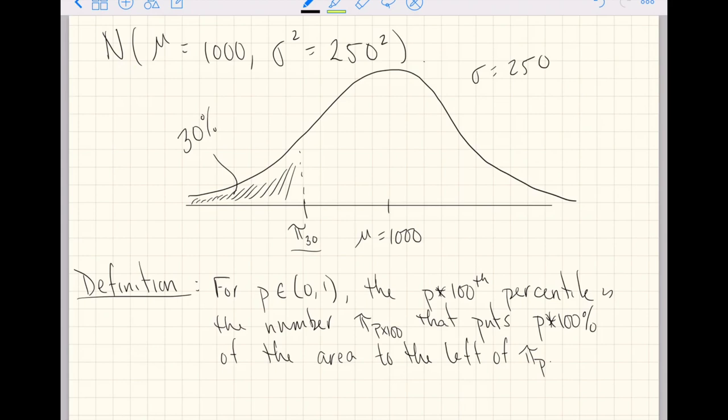Similarly, we could write this out in symbols by saying p is the value equal to the probability from your random variable less than π subscript p.